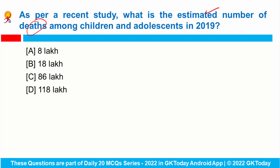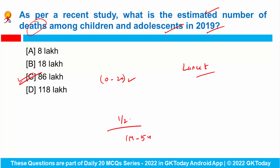As per a recent study, what is the estimated number of deaths among children and adolescents in 2019? According to a new series on optimizing child and adolescent health and development published in The Lancet, over 86 lakh deaths among children and adolescents between 0 to 20 years were recorded in 2019. Stillbirths and neonatal deaths accounted for over half of these deaths, while another one-third occurred in children between one month and five years of age. The authors have called on global leaders and policymakers to offer comprehensive care.